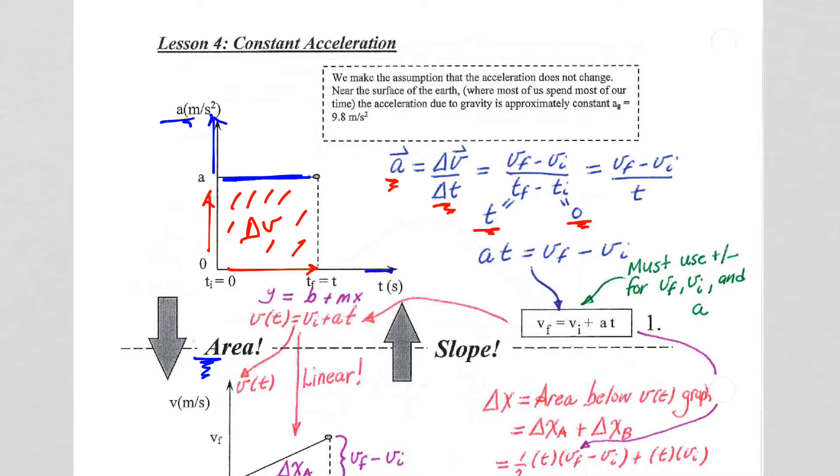So delta V, V final minus V initial. If I drop the subscript off of T final and use zero for T initial divided by T, I cross multiply, I bring my T here up with my A, and I get my constant acceleration equation. There it is. I rearrange it a little bit to get V final equals V initial plus acceleration times time, and this is really important. So make sure you get this into your notes for the constant acceleration equation.